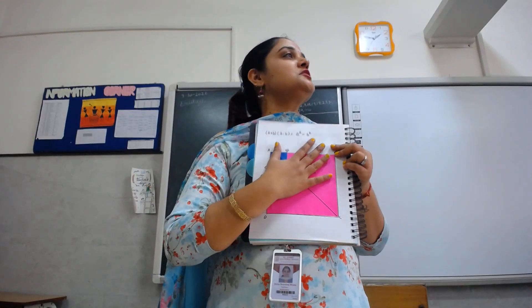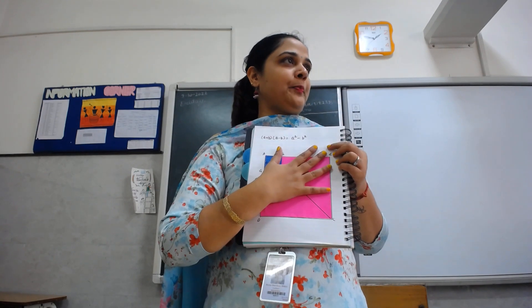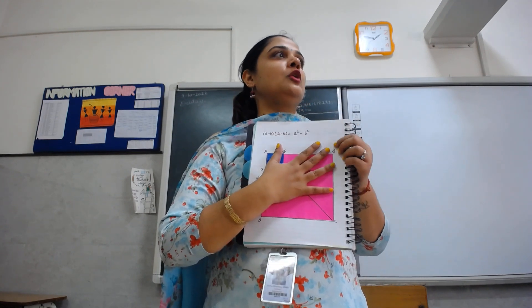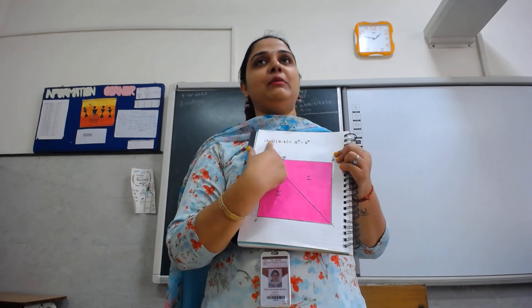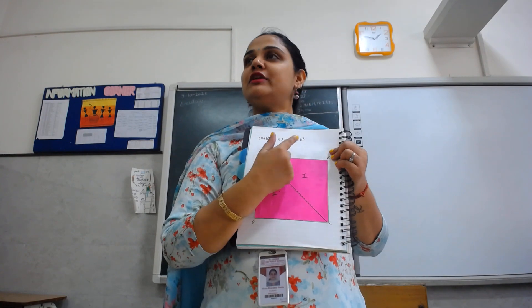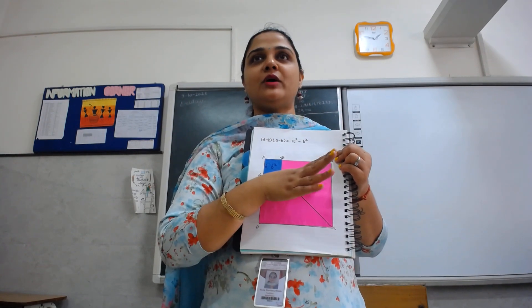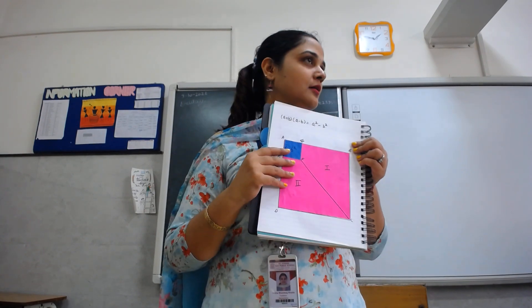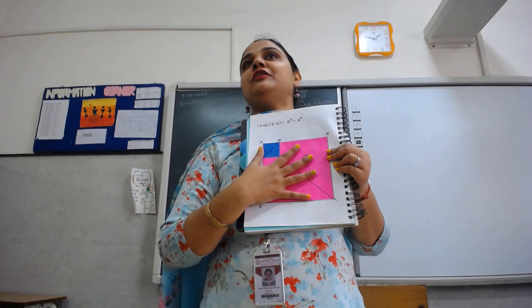We will verify this activity today, in which we are going to cover the identity (a + b)(a - b), which is equal to a squared minus b squared. So, how we are going to verify this — we will use origami sheets for that.